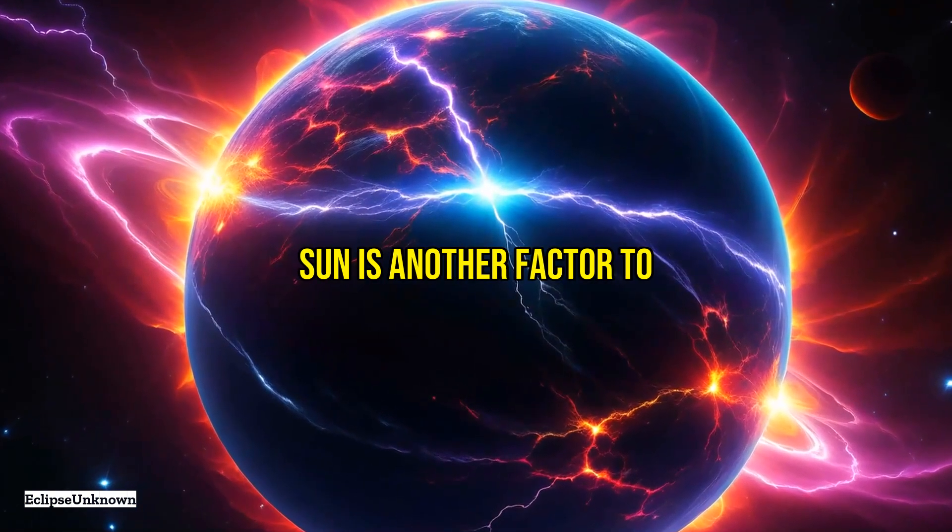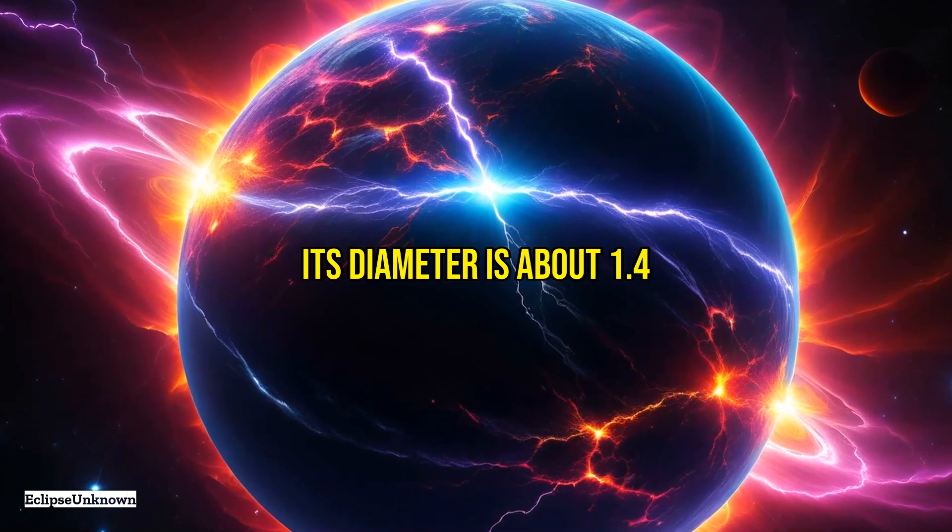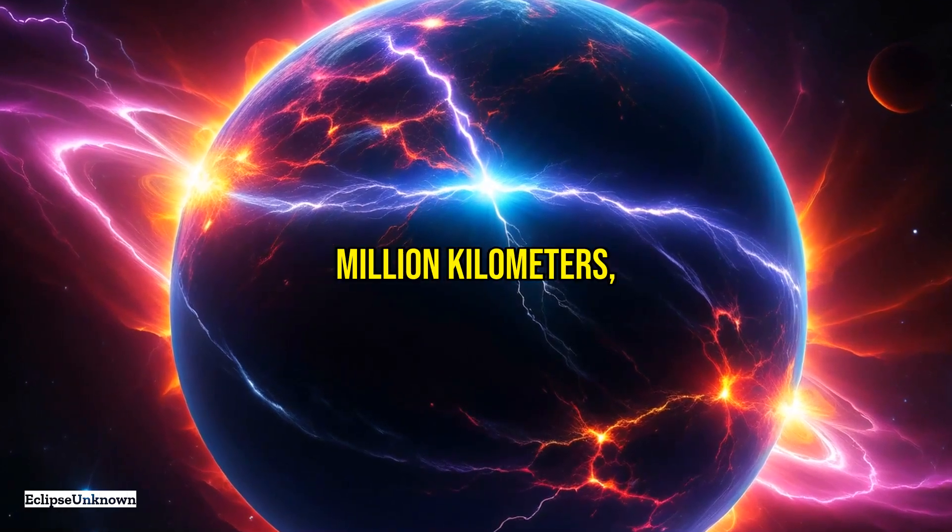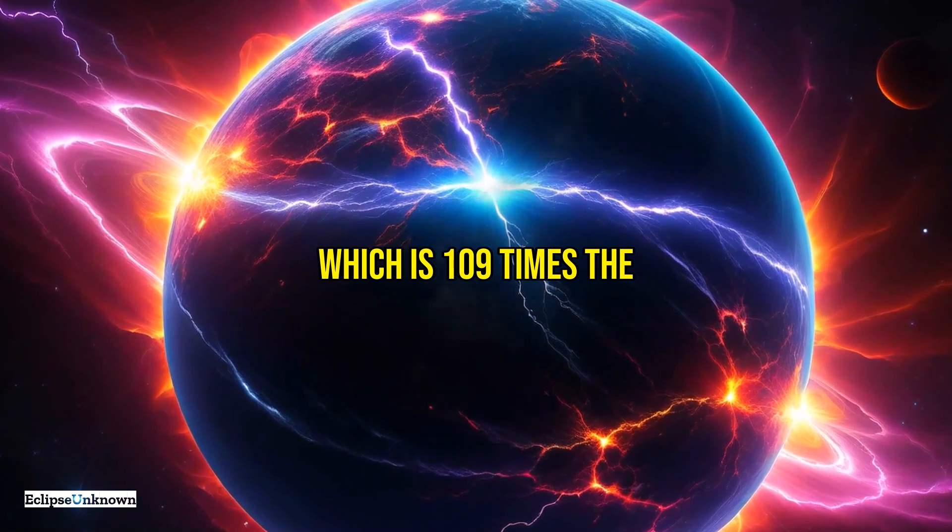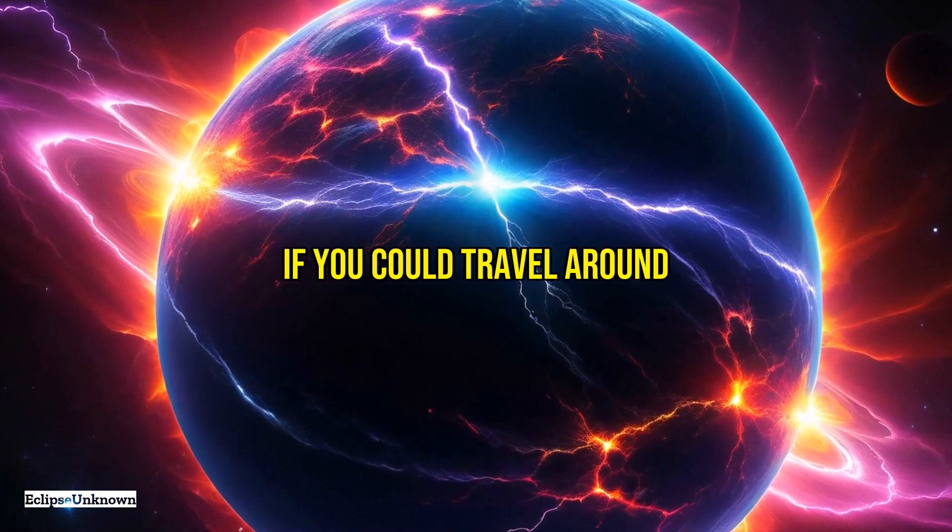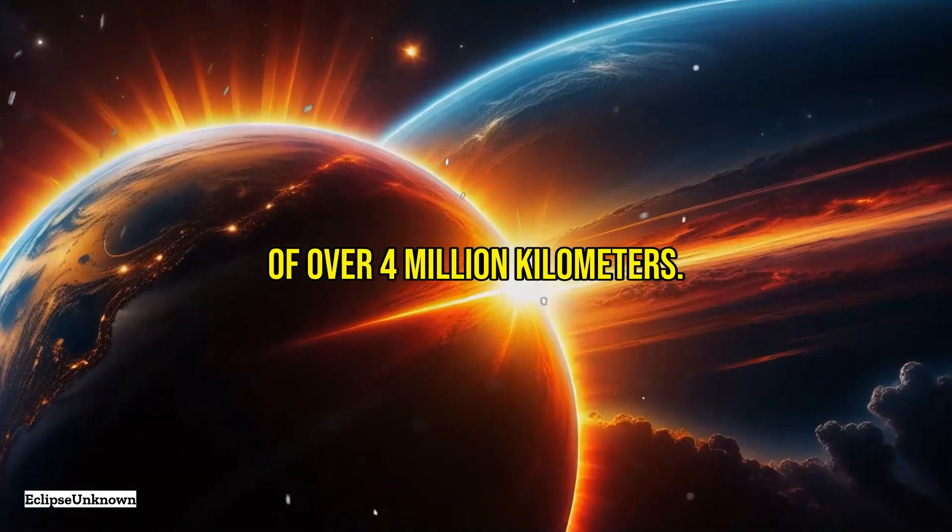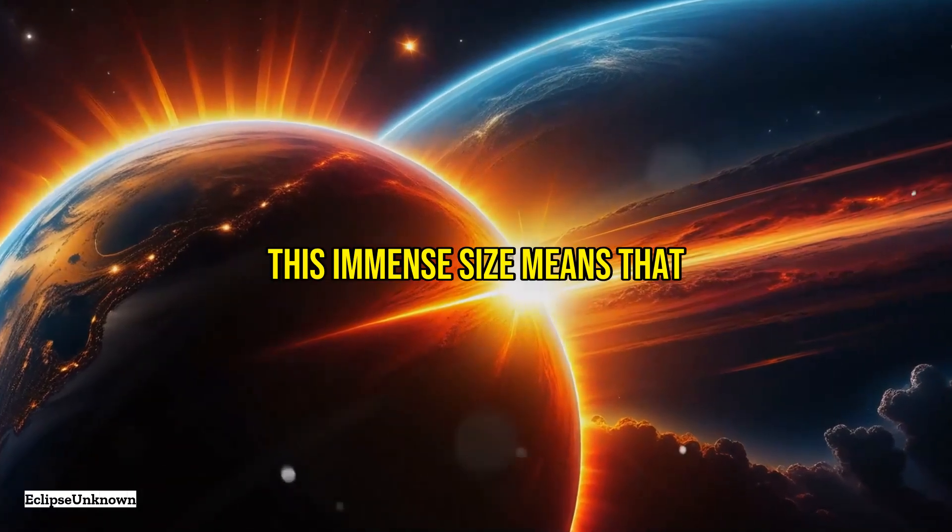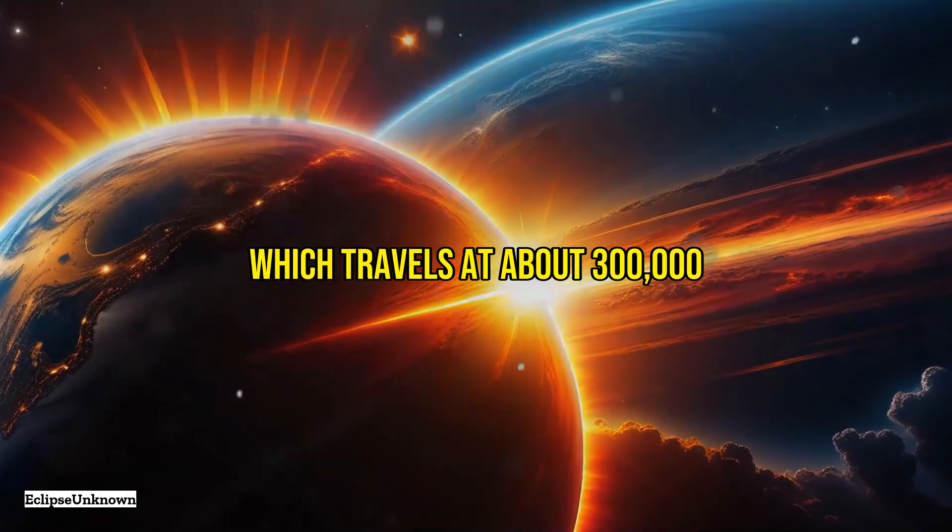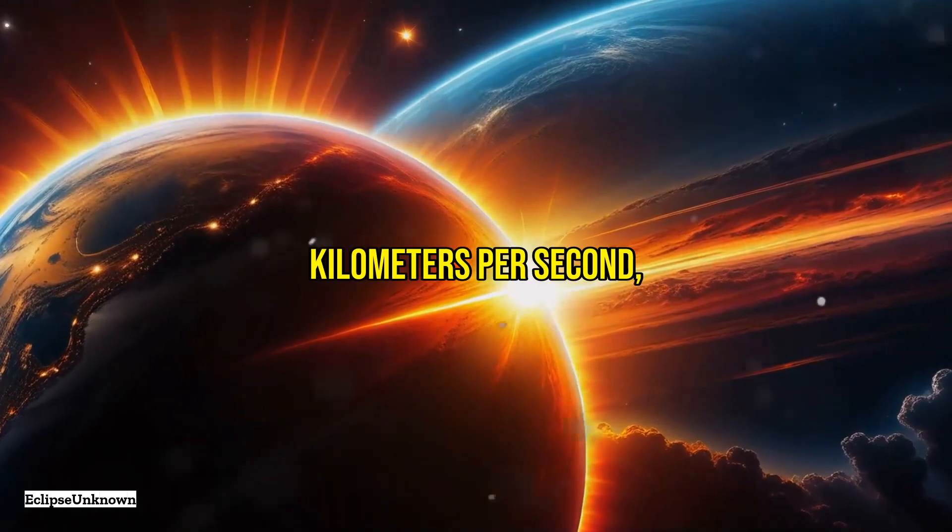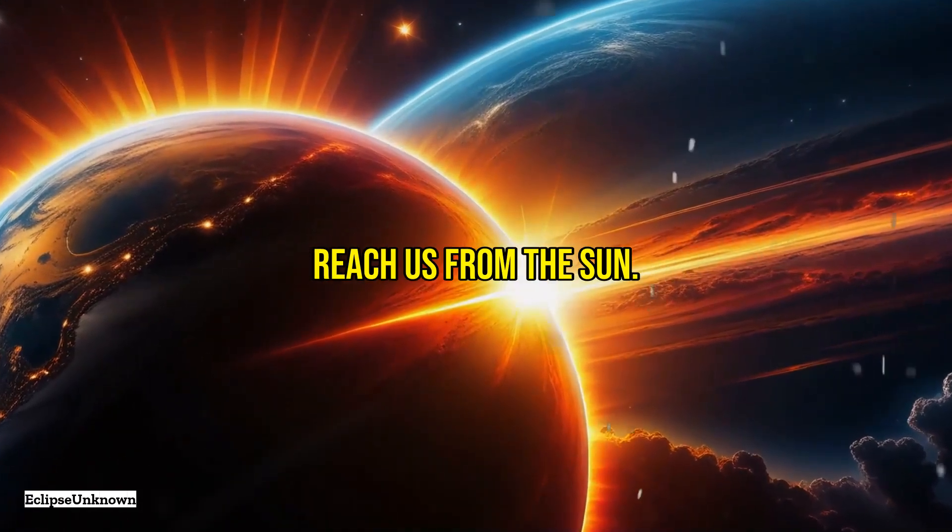The sheer size of the sun is another factor to consider. Its diameter is about 1.4 million kilometers, which is 109 times the diameter of Earth. If you could travel around the sun's equator, it would be a journey of over 4 million kilometers. This immense size means that even light, which travels at about 300,000 kilometers per second, takes around 8 minutes to reach us from the sun.